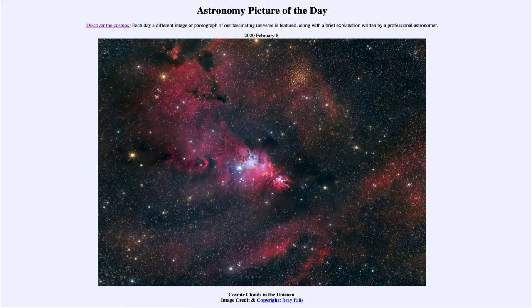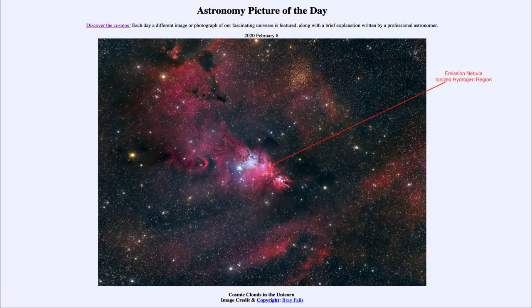So what do we see here? Well, this is taken in the direction of the constellation known as the Unicorn, or Monoceros. And we see a number of star-forming regions here, and a lot of gas and dust that is associated with them. We see several different types of nebulae here, including scattered around the image, a number of red emission nebulae.